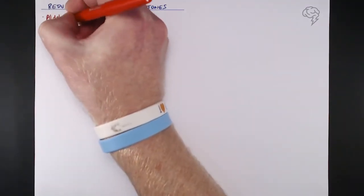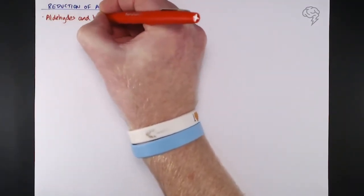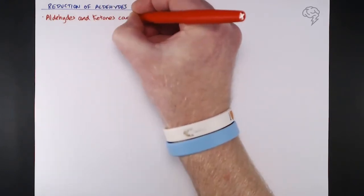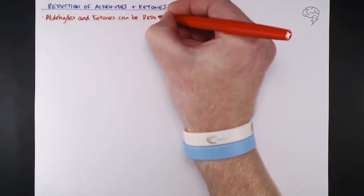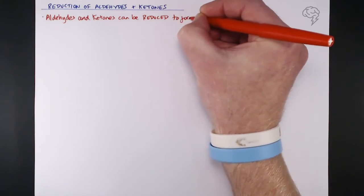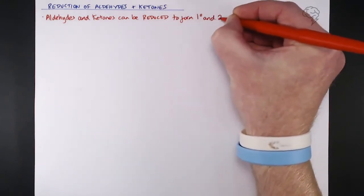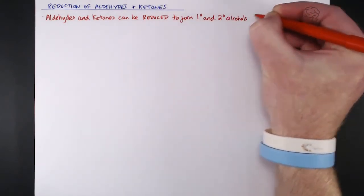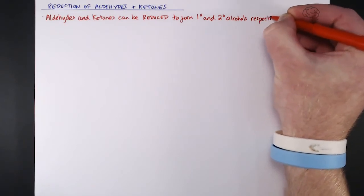Aldehydes and ketones can be reduced to form primary and secondary alcohols respectively, so essentially the opposite of the oxidation process from those primary and secondary alcohols to aldehydes and ketones.